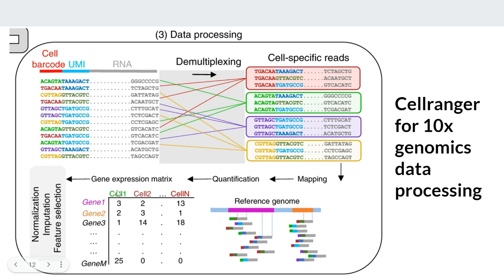The result is a count matrix: genes as rows, cells as columns, with values like 3, 2, 13 representing the number of UMIs — not reads — supporting each gene's expression. It is more accurate to call these UMI counts rather than read counts in single cell technology. Many entries will be zero, meaning that gene was not detected in that cell. Once we have this matrix, we proceed to downstream analysis: normalization, feature selection, and more.